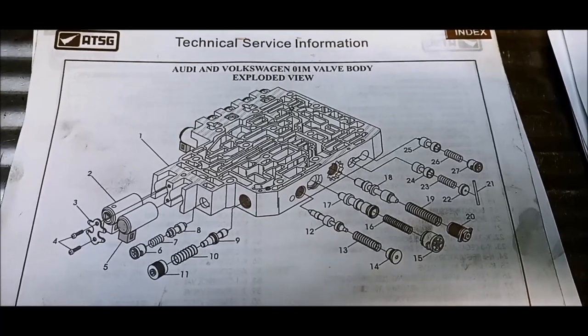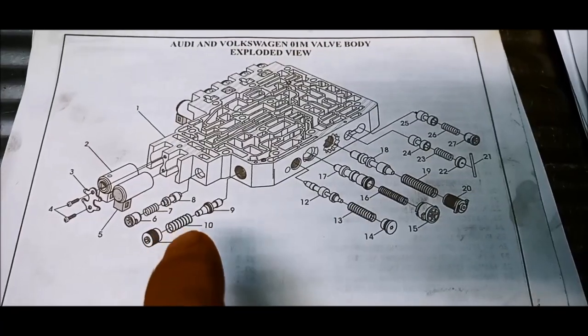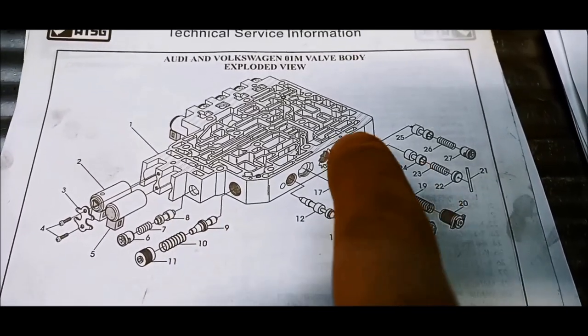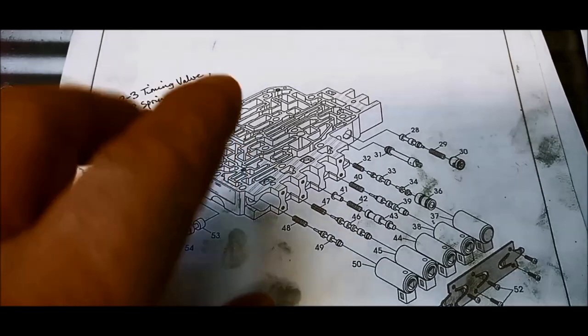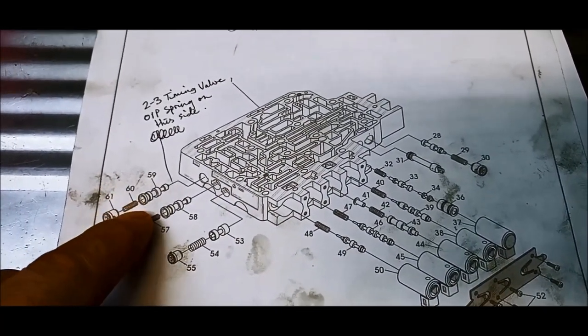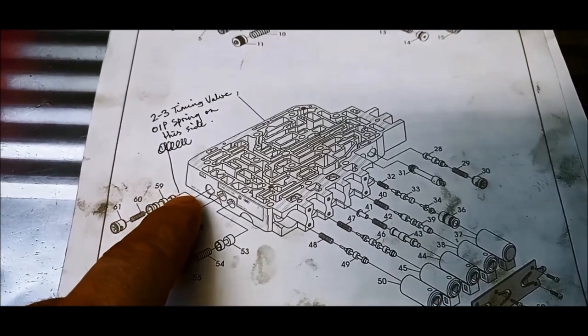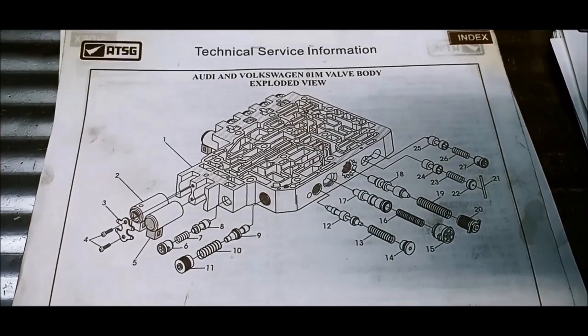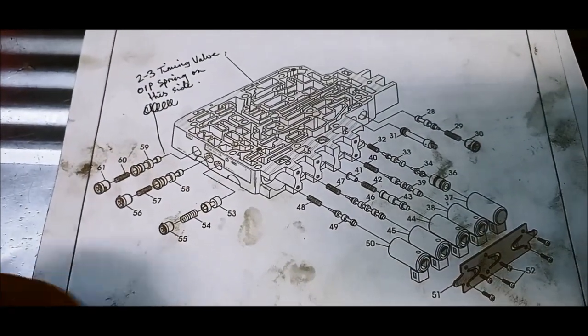Still on the ATSG manual. And you can see just the position of all the valves and the springs in the valve body. And here's one that with the valve body it's rotated. Also note that some O1Ps, the spring isn't on this side, it's on that side. This manual is actually an O1M, but they're a very similar valve body.